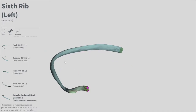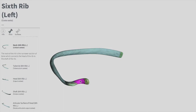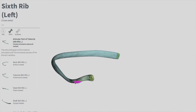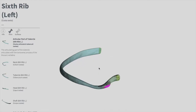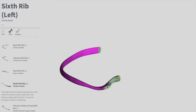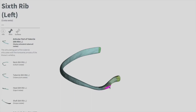The neck is the thin, constricted portion between the head and the tubercle. The tubercle is a prominence on the outer surface of the rib; it has two parts — an articular surface and a non-articular prominence. The articular surface of the tubercle attaches to the transverse process of the thoracic vertebrae. You can highlight the neck in pink to distinguish it from the tubercle.